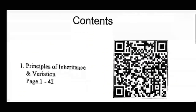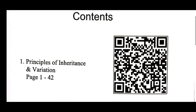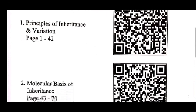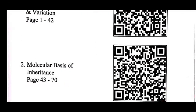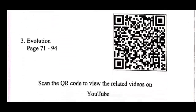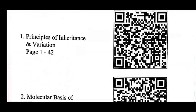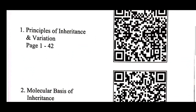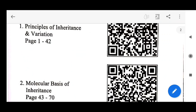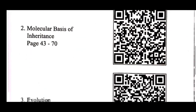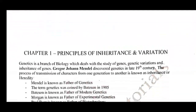If we talk about the contents of this unit, the very first chapter is Principles of Inheritance and Variations from page 1 to 42, after that Molecular Basis of Inheritance from page 43 to 70, and Evolution from page 71 to 94. In this video we are particularly going to talk about Chapter 1 — Principles of Inheritance and Variations — with a page-by-page review.